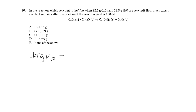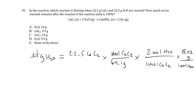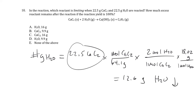A faster approach: pick one reactant and see how much of it is needed to react with the other. How many grams of water are required to react with 22.5 grams of calcium carbide (CaC2)? CaC2 has a molar mass of 40.08 plus 12.01 times 2, so 64.1 grams per mole. For every one mole of calcium carbide, we need two moles of water. With water's molar mass of 18.02 grams, we need 12.6 grams of water to react with this quantity of calcium carbide.